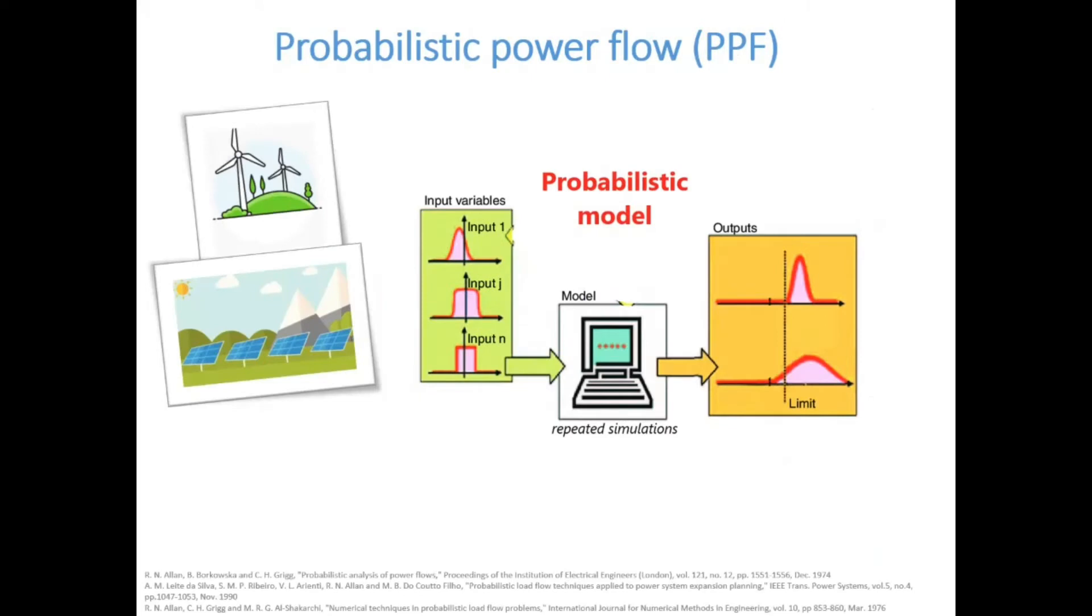These uncertainties can be effectively modeled using a probabilistic power flow. The probabilistic power flow was first proposed in 1974 and has been further developed and applied in power system operation and planning. The probabilistic power flow requires inputs with probability distribution functions to obtain bus voltages and power flows in terms of probability distribution functions so that the system uncertainties can be included and reflected in the solution.